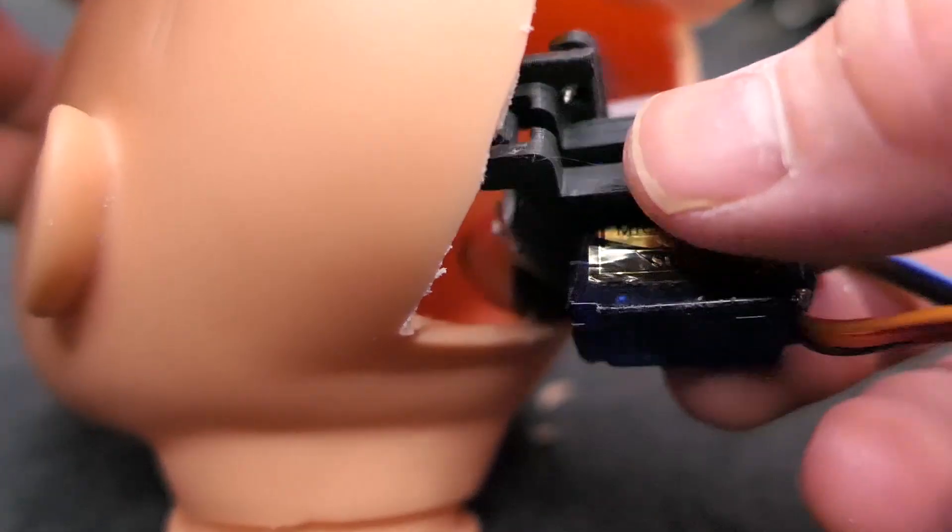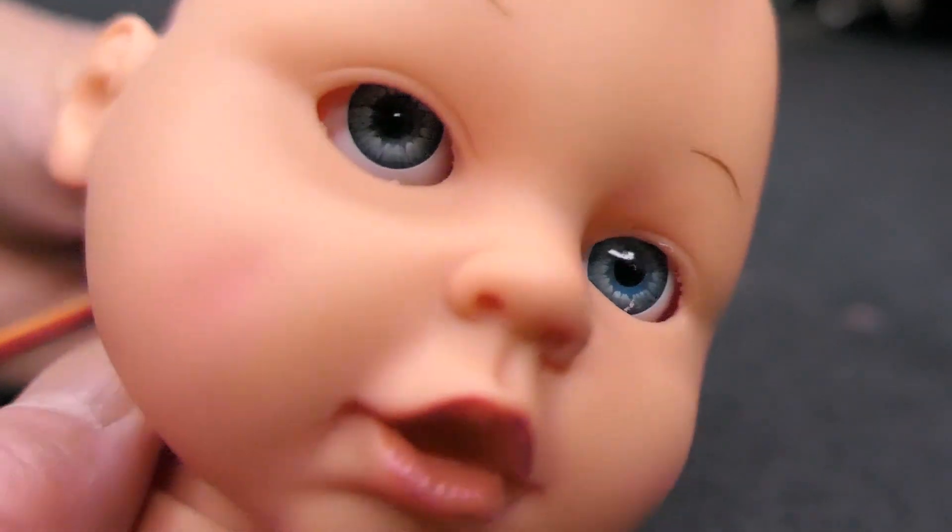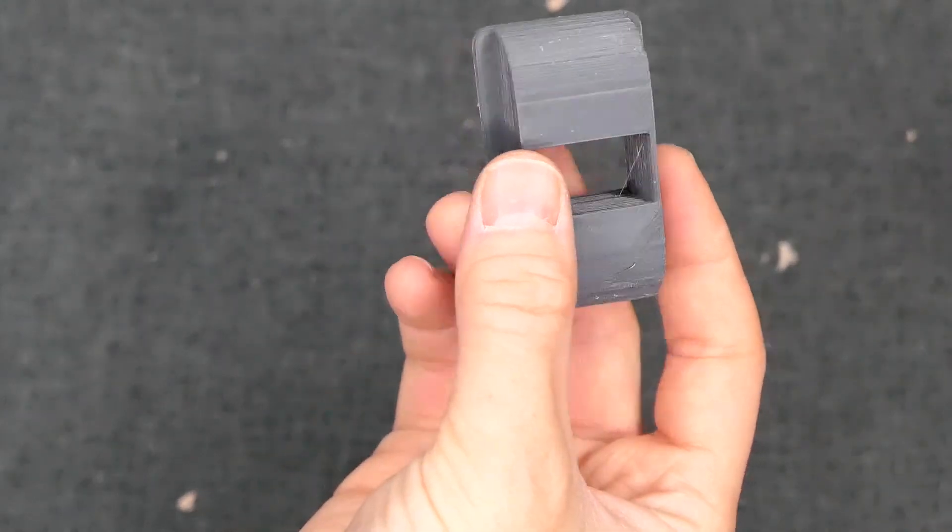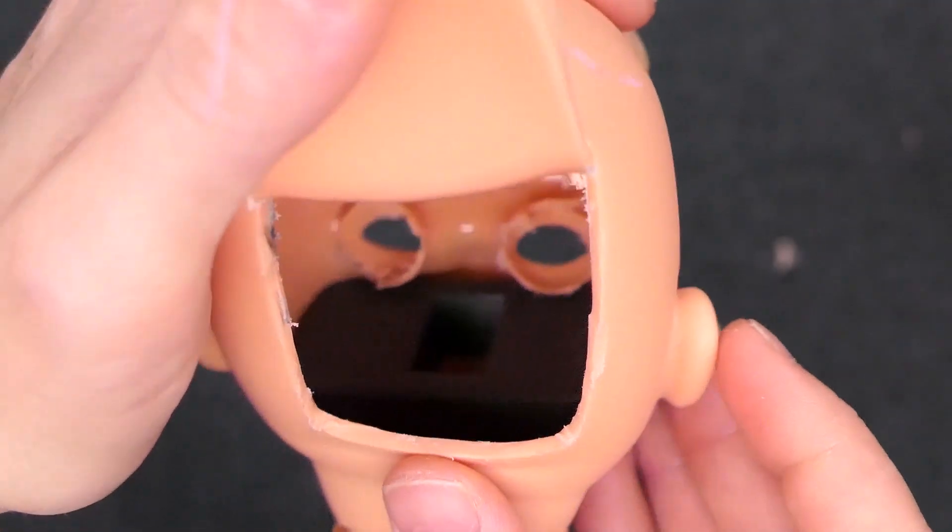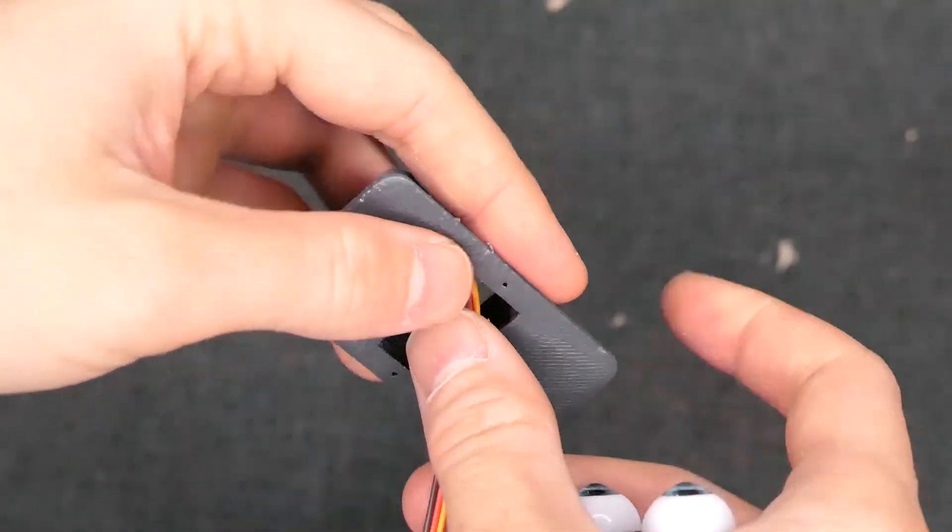You should now be ready to insert the animated eyes. This can be done by placing the servo inside and adjusting accordingly. Although this can be a bit fiddly so I've created this 3D printed part which sits inside and allows the servo to be slotted directly into it.